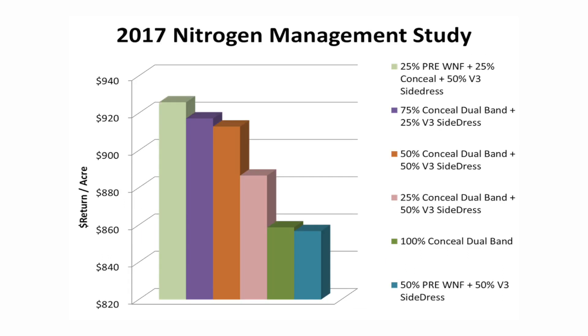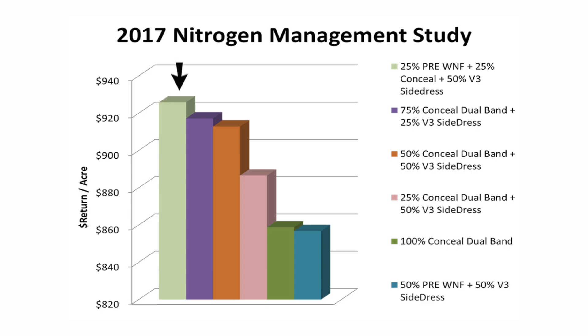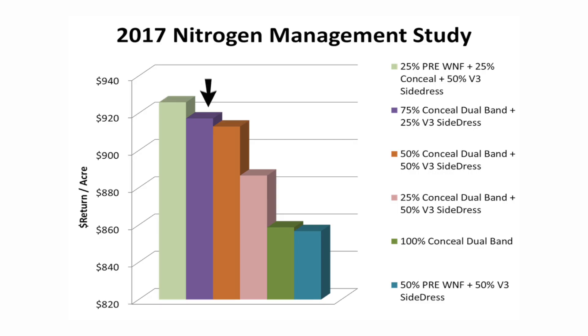Let's take a look at those that beat me. Here's my nitrogen program compared to those that performed better. The top performer this year was a three-way nitrogen application that consisted of 25% as a weed and feed, 25% on the planter, and 50% as a side dress application. Second was eliminating the weed and feed completely and going to 75% with the planter and 25% as a side dress. The next best was once again eliminating the weed and feed and going 50% with the planter and 50% as a side dress.